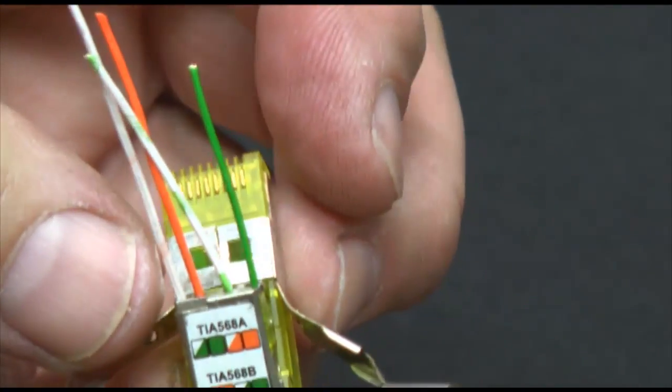Slide the connector back as far as it will go towards the foil tape. Then using your snips, cut off the excess conductors as close as possible to the connector door. Then firmly press the small door closed to complete your IDC connection.